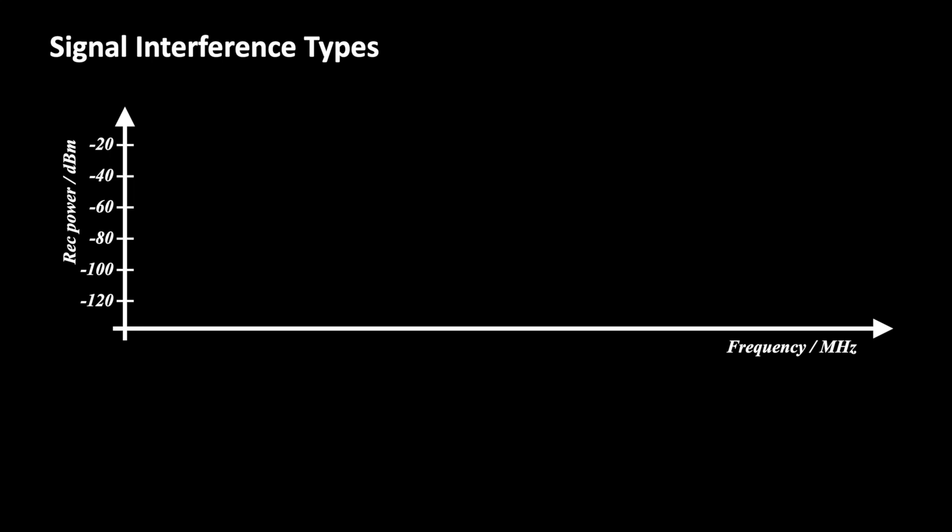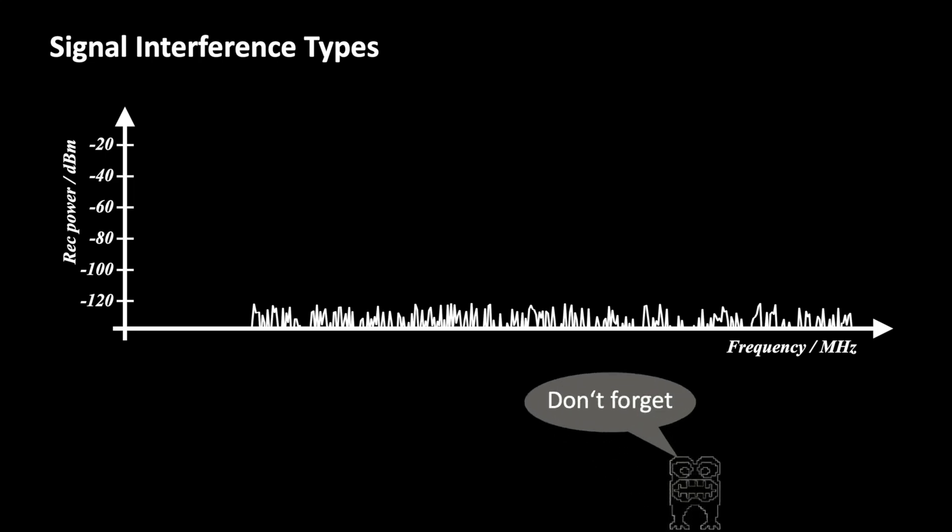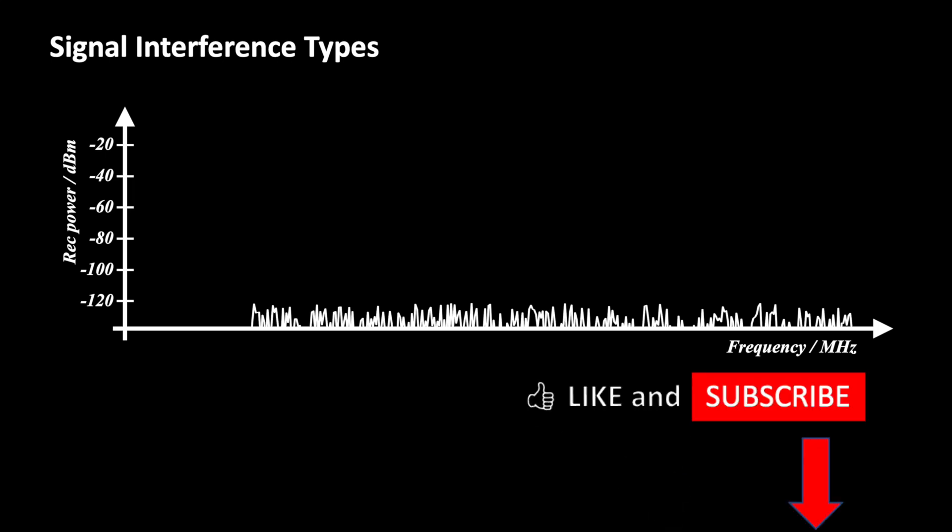Looking at the frequency domain, we can categorize the different types of interference. The horizontal axis represents the frequency range. The vertical axis shows the received signal strength in dBm. There is always a noise floor that is caused by external noise sources and the receiver's intrinsic noise. In case you are interested, there is a video about noise, bandwidth and receiver sensitivity on Electronics Unmasked.